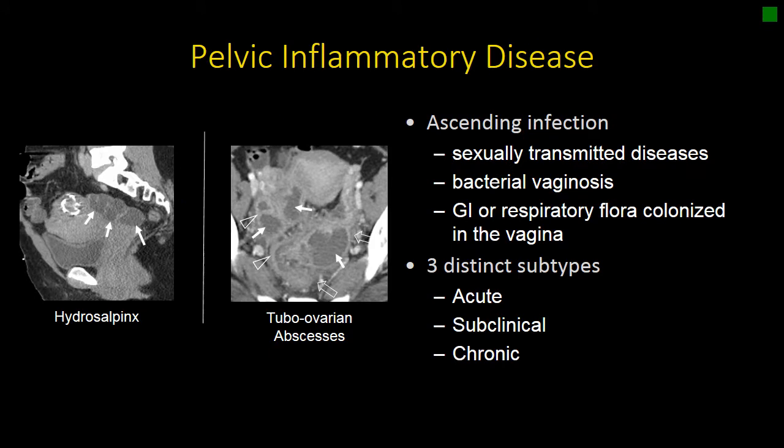Pelvic inflammatory disease can be thought of as an ascending infection. It tends to start with bacteria in the vagina and impact the cervix, uterus, fallopian tubes, ovaries, and then the peritoneal cavity, in that order.